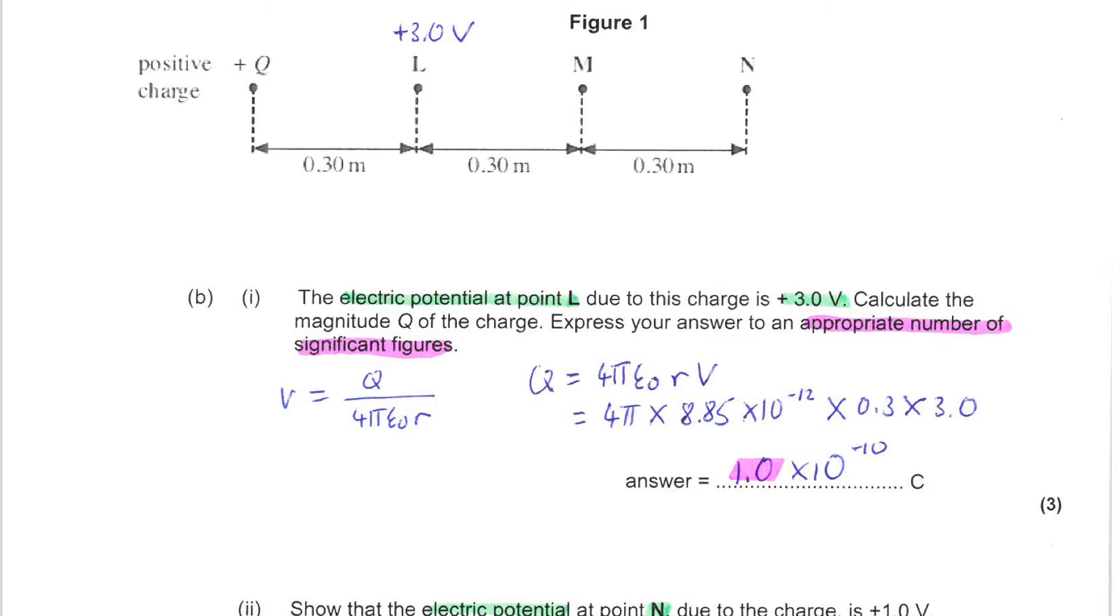So here we have the permittivity taken from the data sheet and we have got the distance from Q to L here and finally we have the value for the potential. Now you need an appropriate number of significant figures in your answer.